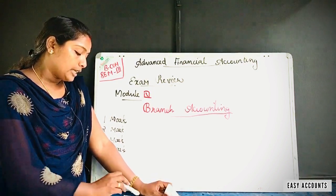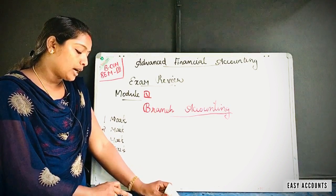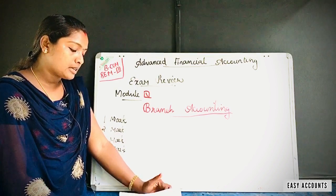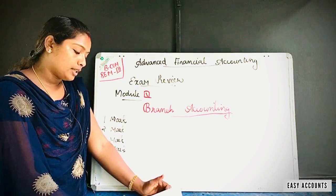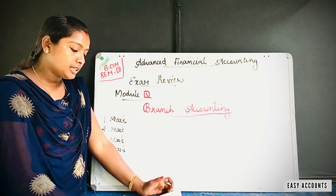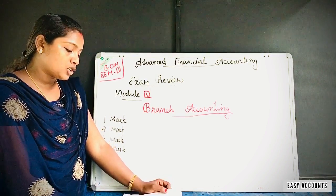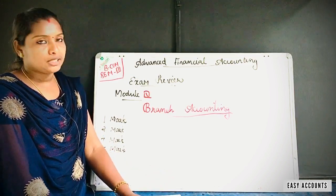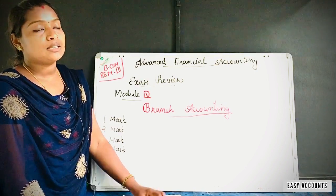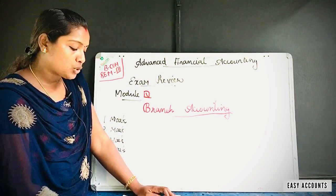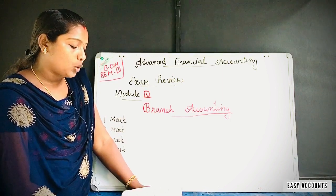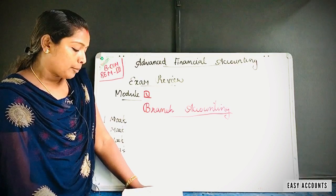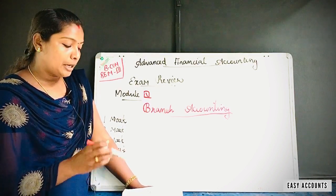We will talk about the different branches and there are four methods in the text. In this case we will talk about another method. What is the stock and debtor system? We are talking about the stock and debtor system. There are many accounts and three other methods in the text.